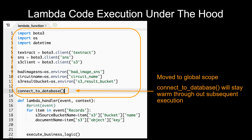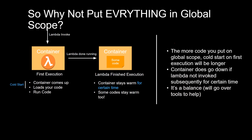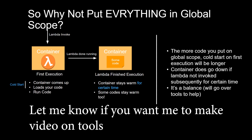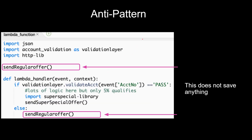Reading environment variables at the top is also good practice since they get reused every time. However, you're probably asking: why not put everything in global scope? The more code you put in global scope, the longer the cold start on the first execution will be. And the container does go down if the Lambda is not invoked within a certain time. So it's a balance — you can use tools to determine what to move and how much time each part takes.